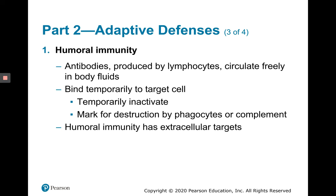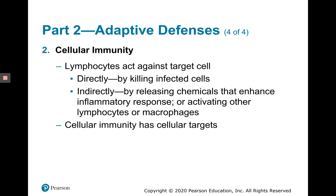Humoral immunity is also associated with extracellular targets like bacteria. The cellular arm of the adaptive defense system uses T lymphocytes. When activated, these T lymphocytes become effectors like cytotoxic T cells, which directly kill infected cells, or helper T cells, which release chemicals that enhance inflammatory responses or activate other lymphocytes or macrophages. Cellular immunity is associated with intracellular targets like viruses.